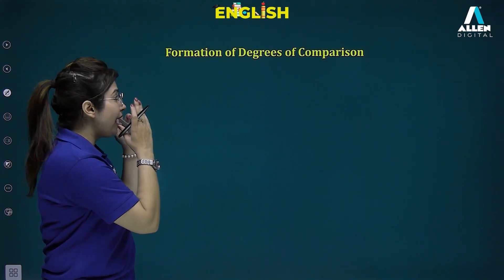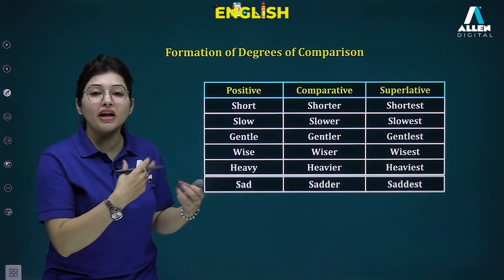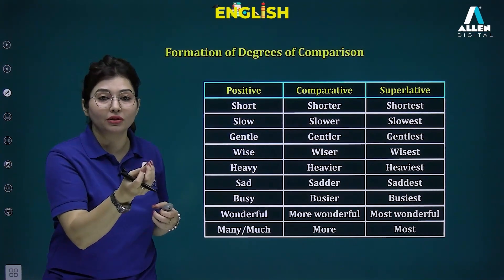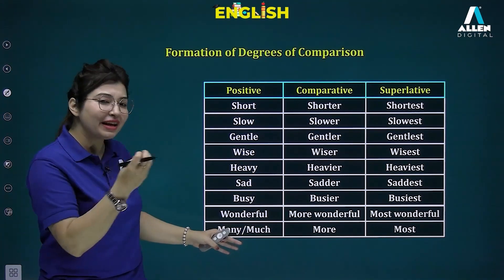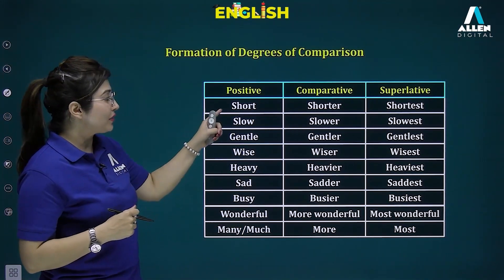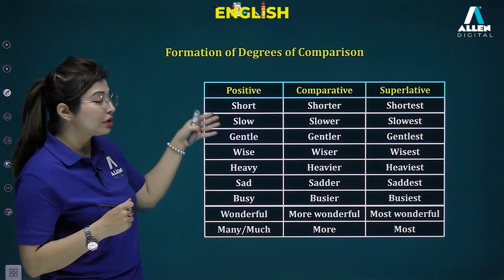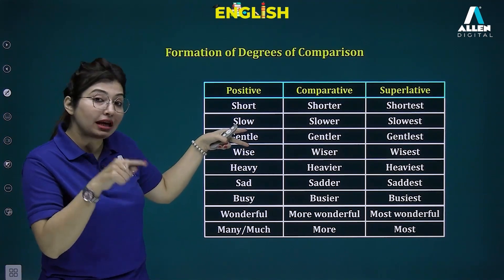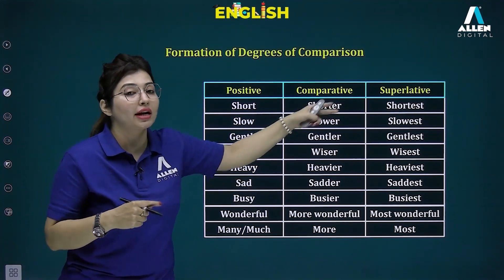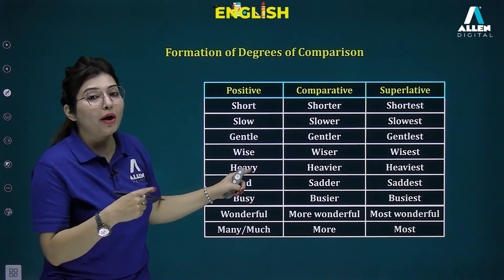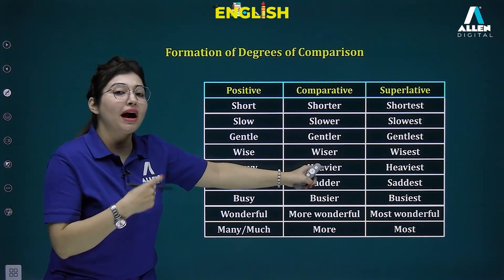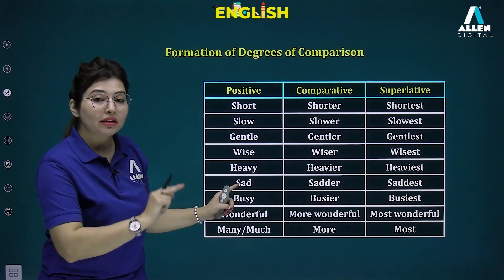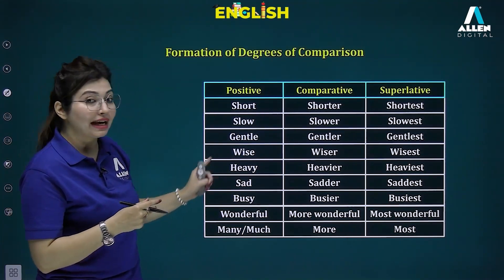Now let's look at the formation rules for degrees of comparison. When a word ends with a consonant like 'short' or 'slow', we add -er and -est for comparative and superlative. When the word already ends in -e, we just add -r and -st. When ending in -y, we remove the y and write -ier and -iest, like 'heavier'. Sometimes we double the last consonant — 'sad', 'sadder', 'saddest'; 'thin', 'thinner', 'thinnest'.